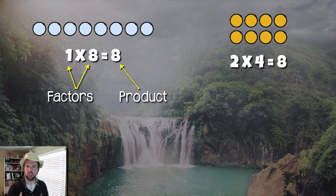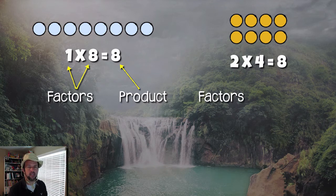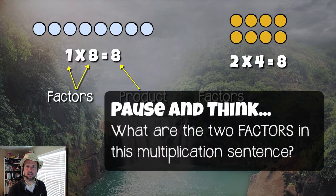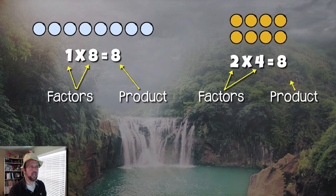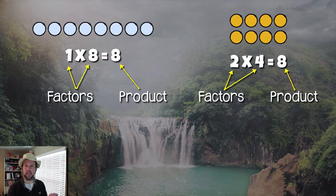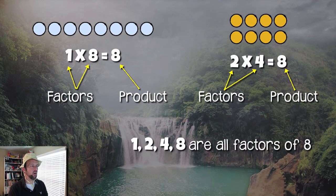This array, like the other, is made up of factors. We have two factors: 1 and 8. Those are the factors that make up the product, which is 8. These are terms you've probably heard before — we're just refreshing our memory. Same thing for the second array: it has two factors and a product. The two factors are 2 and 4, and our product is 8. So the factors of the number 8 are 1, 2, 4, and 8.